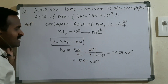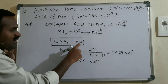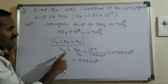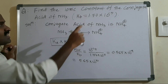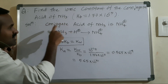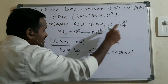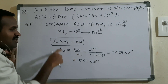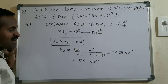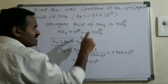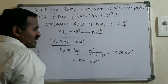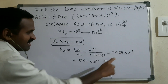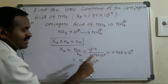We use the relation Ka × Kb = Kw, where Kw = 10⁻¹⁴. The ionic constant of the conjugate acid (Ka) = Kw / Kb = 10⁻¹⁴ / (1.77 × 10⁻⁵). Simplifying gives 0.565 × 10⁻⁹ = 5.65 × 10⁻¹⁰.